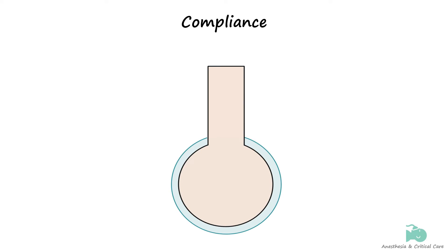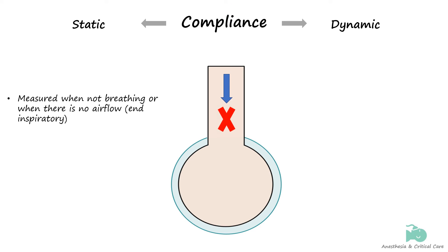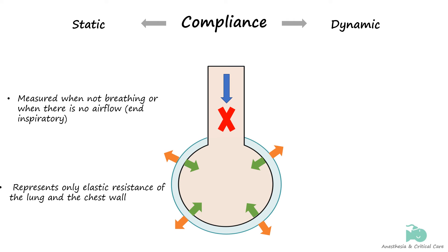The compliance of the lung can be divided into static and dynamic compliance. Static compliance describes pulmonary compliance when the patient is not breathing or when there is no airflow, such as during an inspiratory pause. It is defined as the change in lung volume by the change in pressure in the absence of flow, and relates to the elastic resistance of the lung and the chest wall.